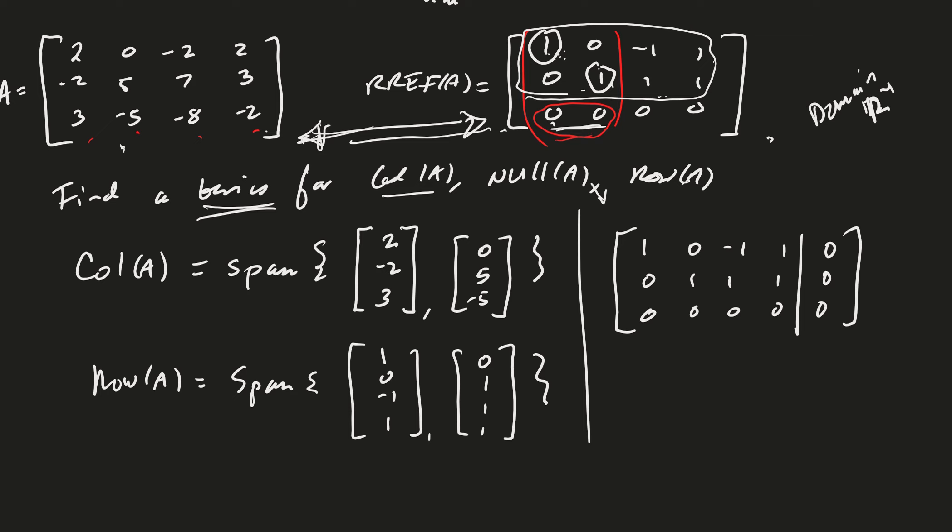We have two vectors for the row space, so two vecs for the row space, so that leaves two vecs for null space. And of course it is the number of free variables, right? So that's two in this case. Let's go ahead and solve it.